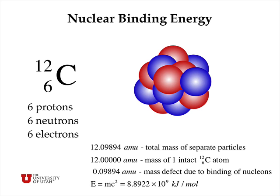Now let's talk about nuclear binding energy, using carbon-12 as an example. Carbon-12 has 6 protons, 6 neutrons, and 6 electrons. If we measured the mass of all those separated particles, it would be about 12.1 atomic mass units. The mass of an intact carbon-12 atom is exactly 12 atomic mass units by definition. The mass defect—the amount by which the mass is lowered by bringing all these particles together and allowing them to bind—is nearly 0.1 amu.